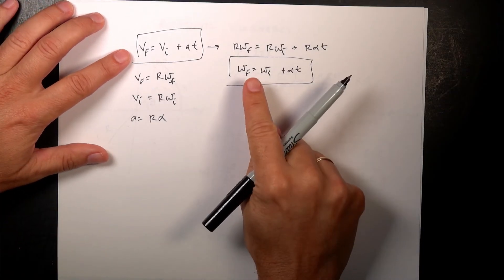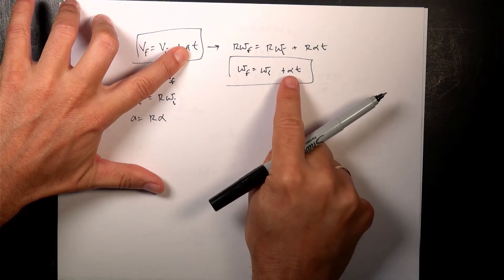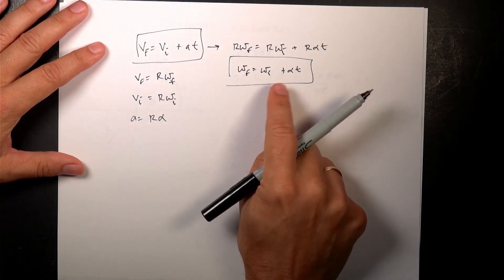And compare that to this. It looks the same, but instead of velocity, I have angular velocity. Instead of acceleration, I have angular acceleration. But that kinematic equation still works.